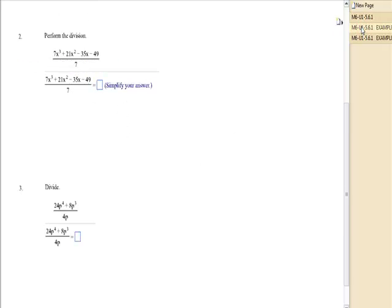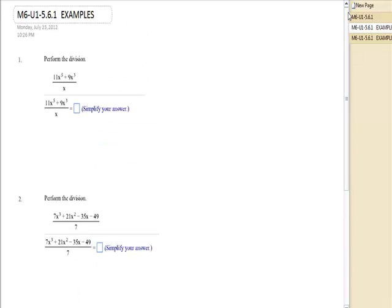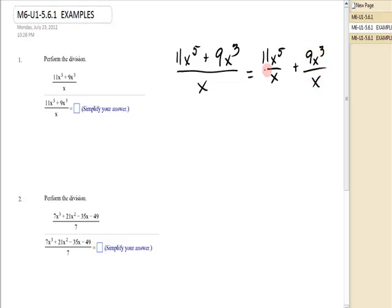Let's take a look. The first one I have 11x to the 5th plus 9x to the 3rd over x. Well, the denominator is a monomial, one term, so I'm going to break this up to 11x to the 5th over x plus 9x to the 3rd over x.